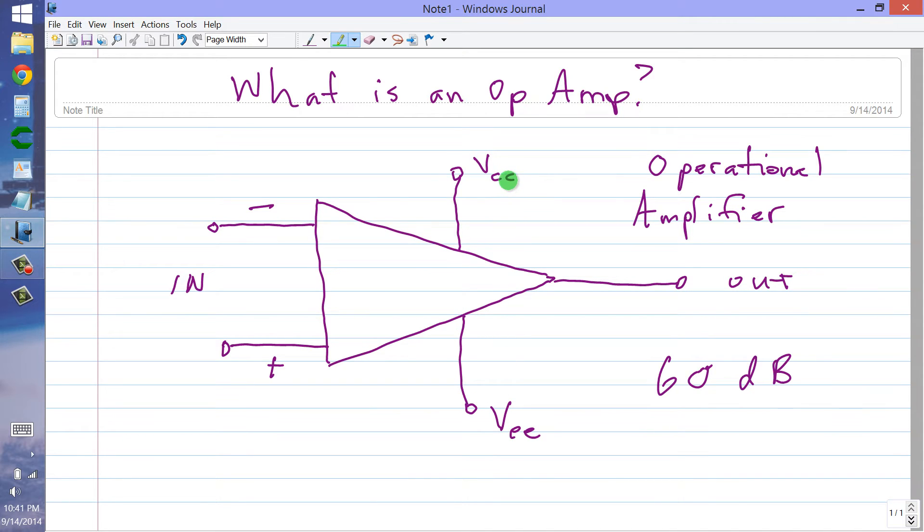These right here, VCC means the voltage that goes to the collectors of the transistors inside. If they are NPN transistors, then that's going to be a positive voltage.